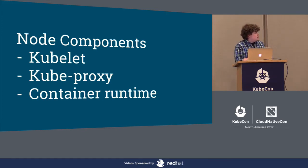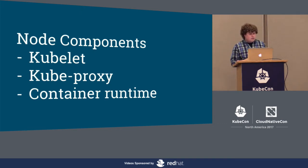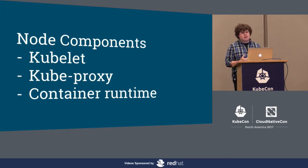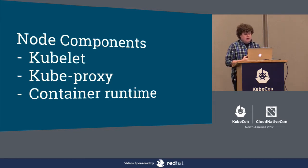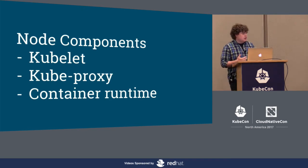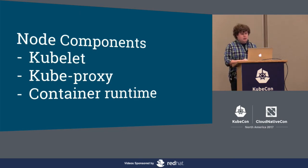The scheduler is in charge of scheduling unscheduled pods. On the nodes, Kubelet is the star of the show — it watches for pods that have been assigned to its node and then runs them, constantly querying the API server for pods to run. Kubeproxy handles any networking things needed, maintaining port forwarding and managing networking rules. And since we're running containers, we need some sort of container runtime, whether it's Docker, Rocket, CRI-O, or what have you.